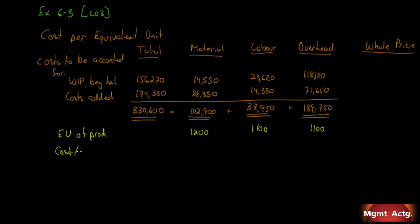We want our cost per equivalent unit — we just do some division. If we take the $102,900 in total material costs divided by 1,200 equivalent units, we get $85.75 of material cost per unit. For labor, we have 1,100 equivalent units and a total cost of $37,950, so $37,950 divided by 1,100 gives us $34.50 per equivalent unit in labor. For overhead, $189,750 divided by 1,100 gives us $172.50.